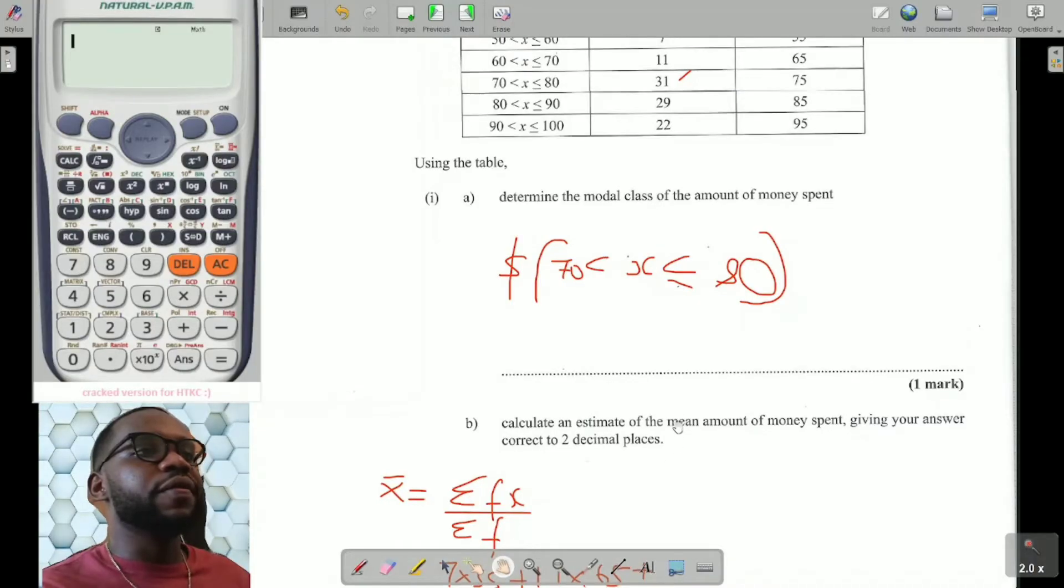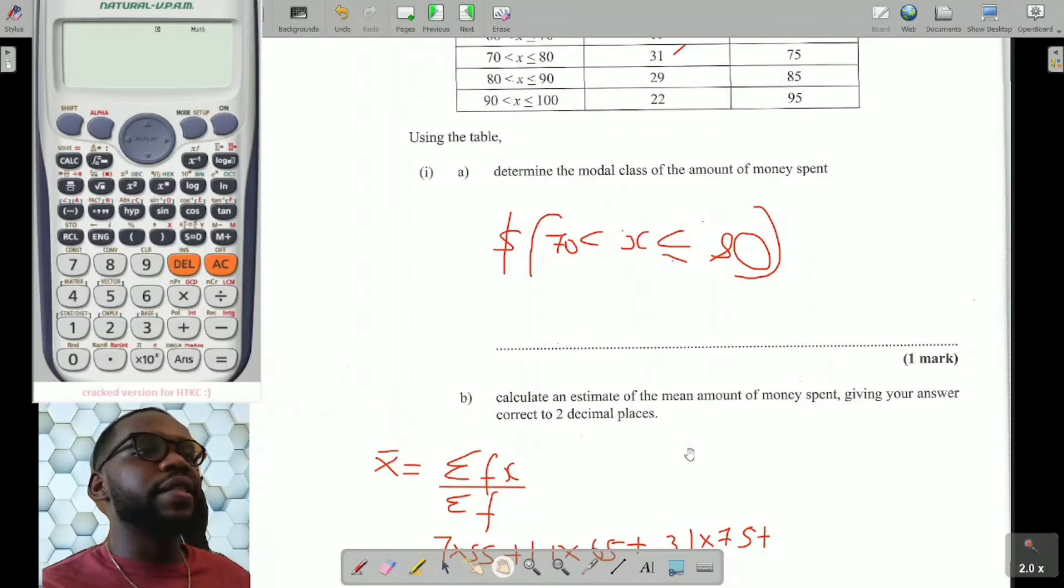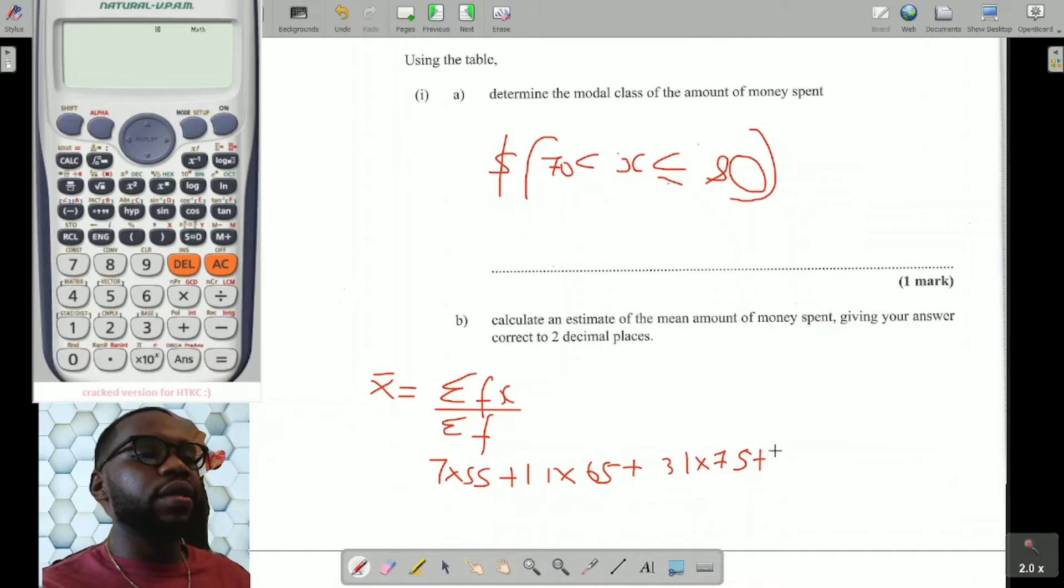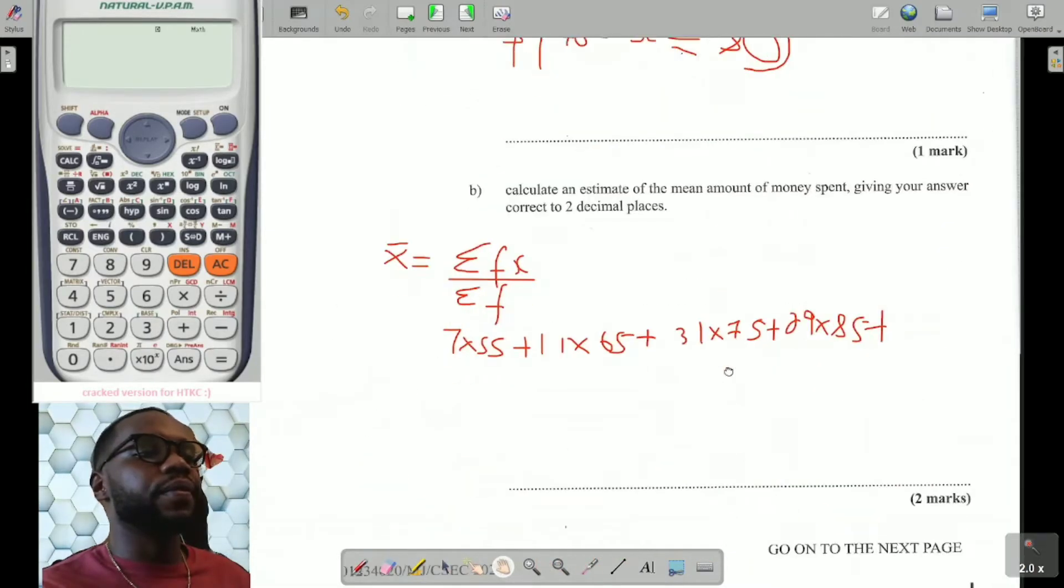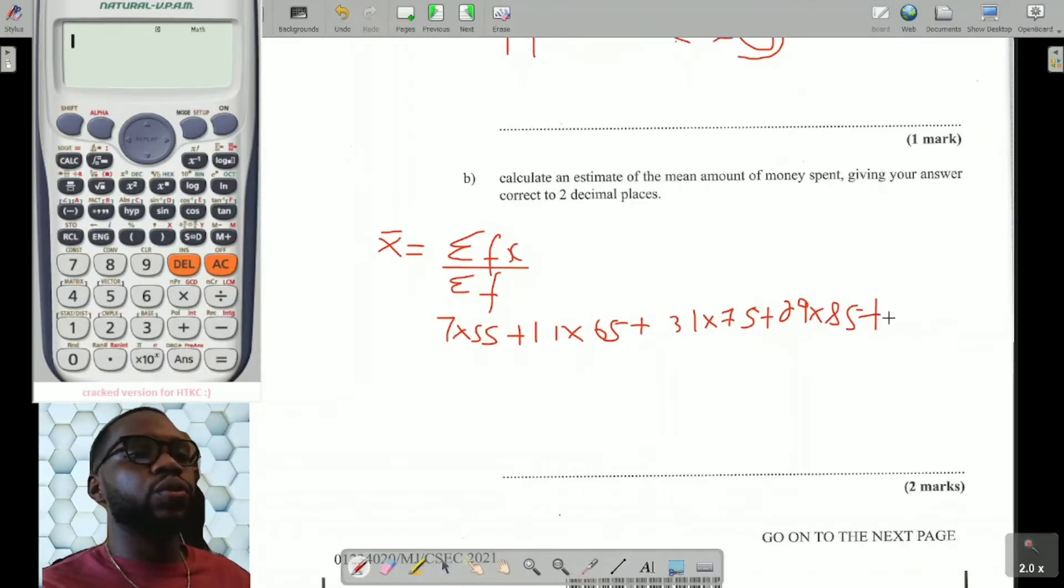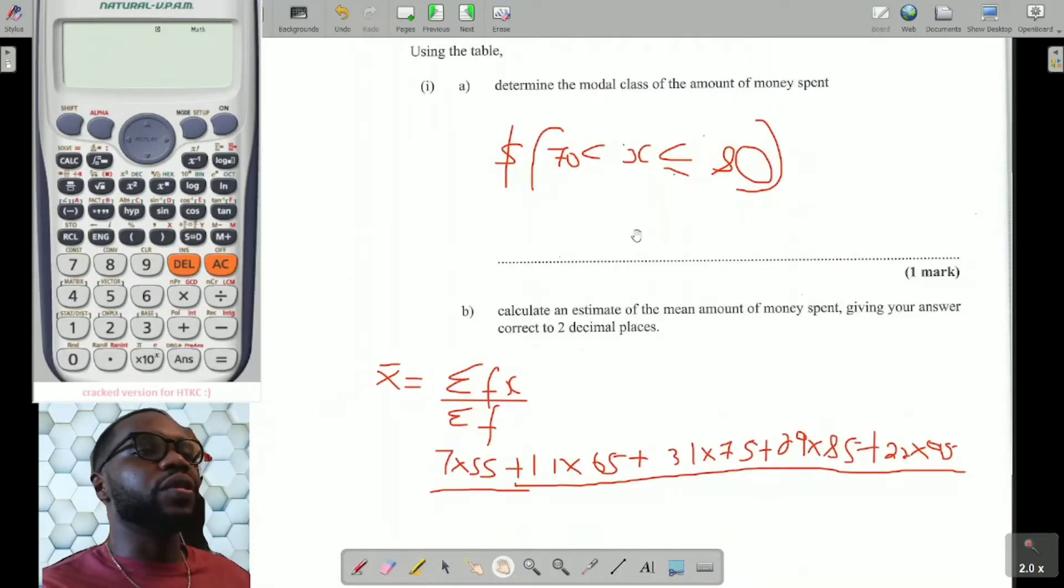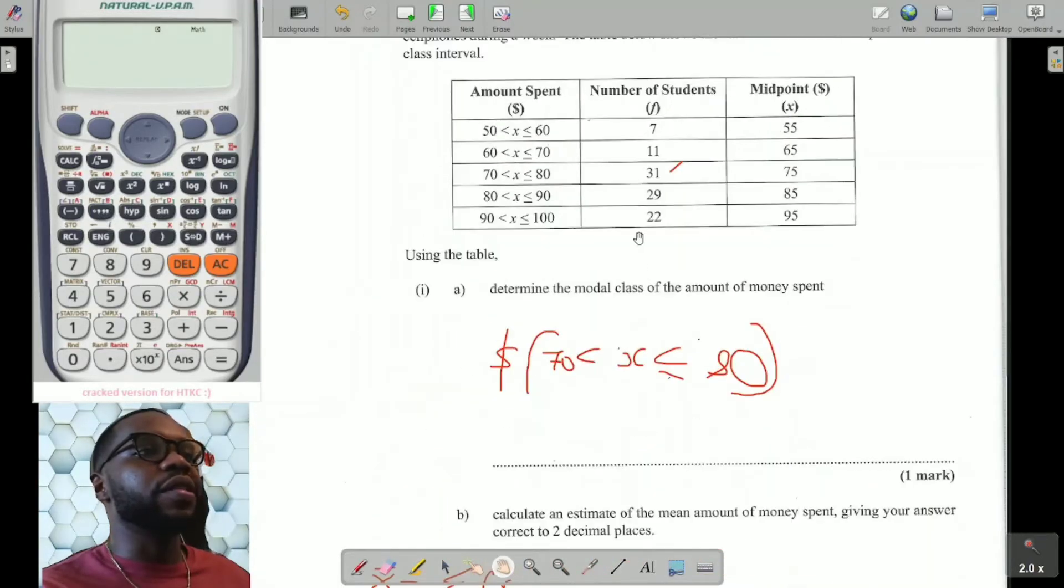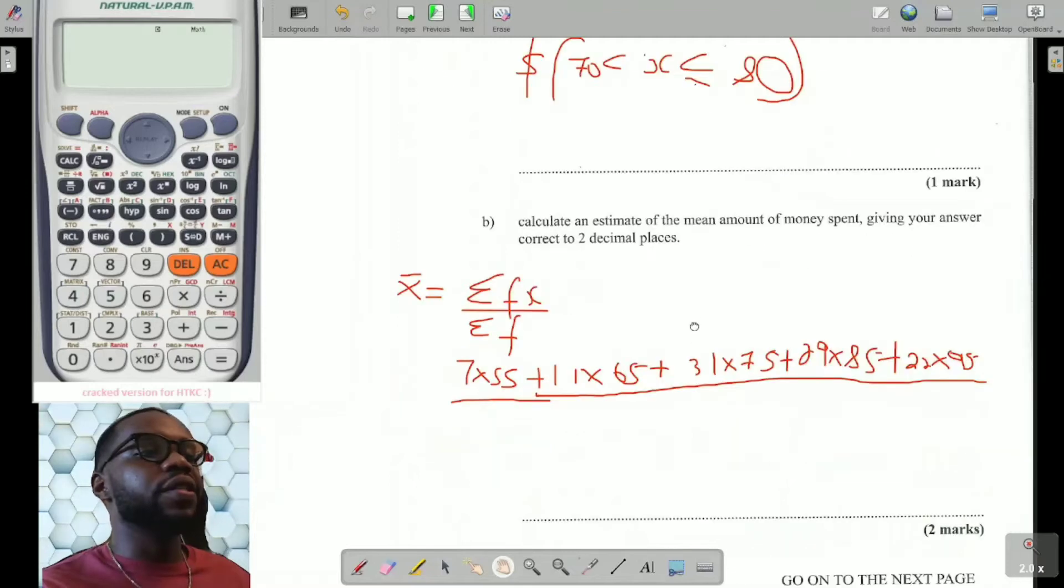So 7 times 55 plus 11 times 65 plus 31 times 75 plus 29 times 85, and then finally 22 times 95. And all of this goes over the total frequency. Now, sometimes in the question, you're told what the total frequency is, so you don't even have to work it out. 100 students. So there you go. You don't even have to add up the frequency for yourself. It is 100.